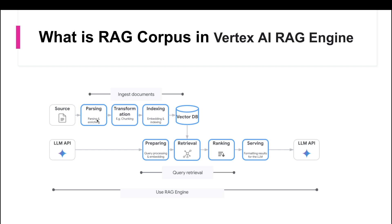In data transformation, the data is split into chunks. You first parse and enrich the data, then convert it into chunks. For example, if you have a PDF file with a hundred pages, it will convert this big PDF into 10 different chunks. Then something called embedding happens. Embedding is a numerical representation of the words or pieces of text that have been written into the chunks.